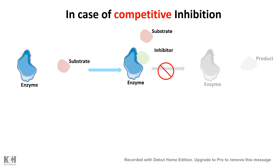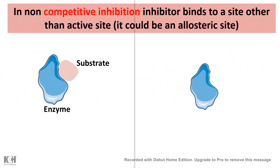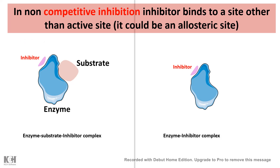So what is non-competitive inhibition? In non-competitive inhibition, the inhibitor does not compete with the substrate for the active site. That means it doesn't care whether the substrate is bound to the active site or not. The inhibitor binds to a region different from the active site — it might be the allosteric site. The inhibitor can bind whether the enzyme is alone or in an enzyme-substrate complex, and in each case the reaction does not proceed.